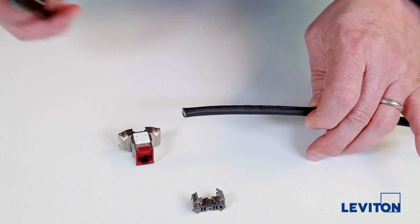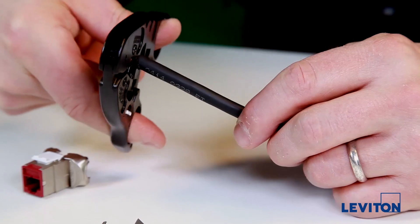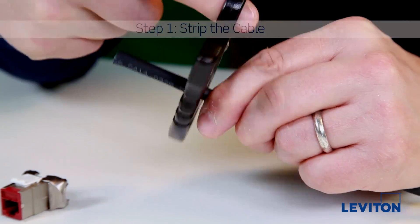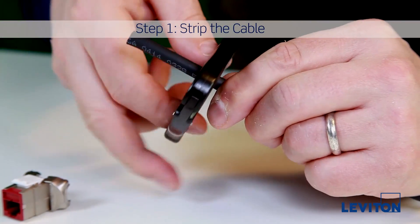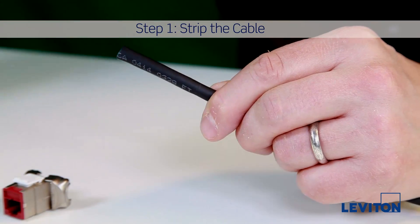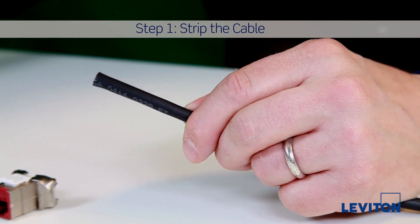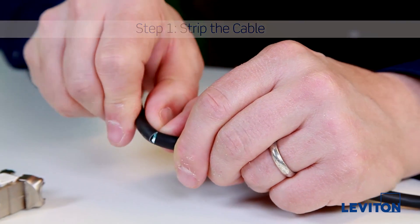With the Category 6A strip tool, set the proper depth for the cable you're using and go once around so you don't cut into the conductors or foil. Next, break and remove the jacket.